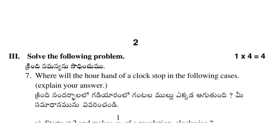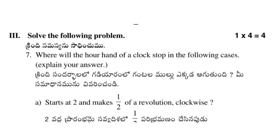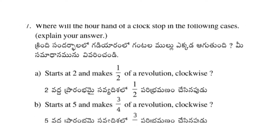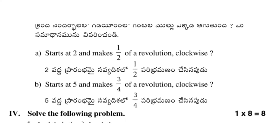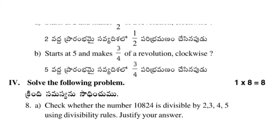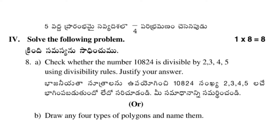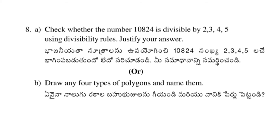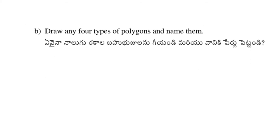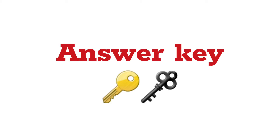In the third roman numeral section, there is only one question which carries four marks, and here also we don't have any choice. In the last roman numeral section, we have to write only one question — either A or B — and it carries eight marks. Let's see the answer key for this question paper.